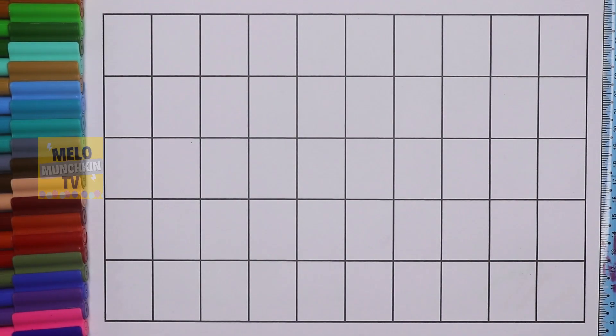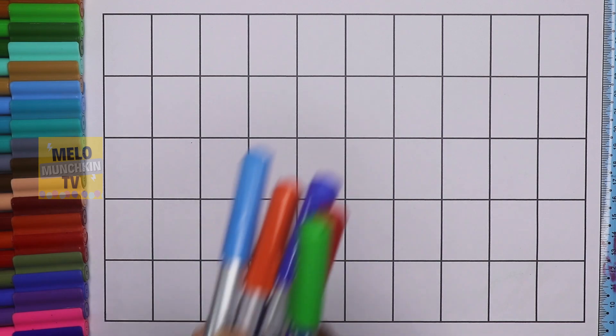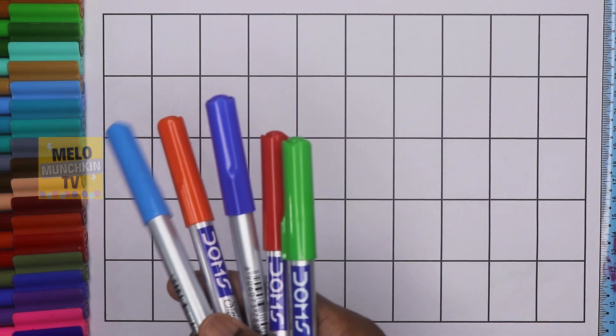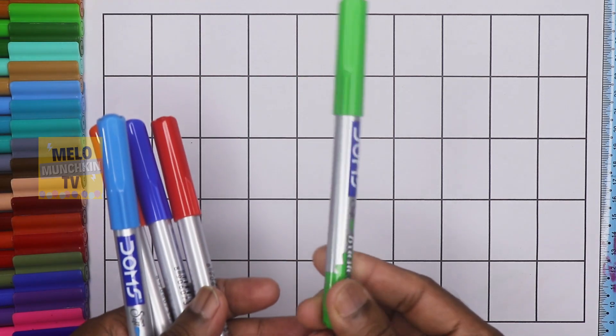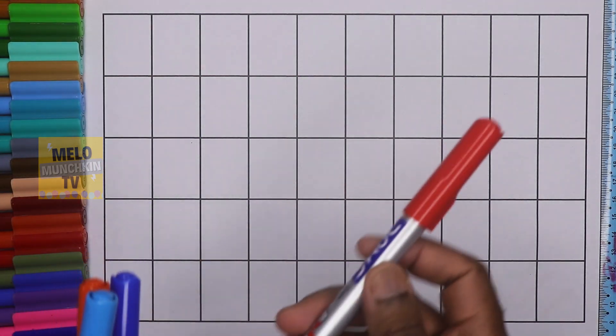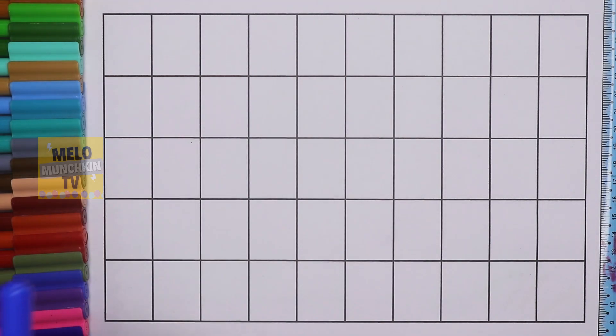Hello kids, today we'll learn numbers from 1 to 50. I'll use these five colors to write the numbers. So what are these colors? Let's see: green color, light green color, red color, dark blue color, orange color, and